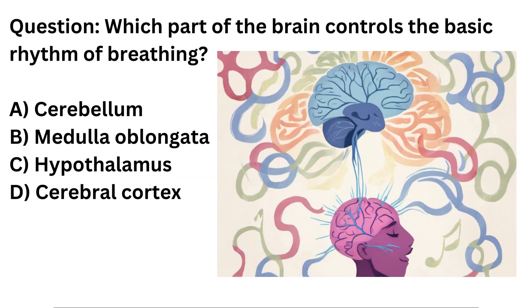Question. Which part of the brain controls the basic rhythm of breathing? A. Cerebellum. B. Medulla oblongata. C. Hypothalamus. D. Cerebral cortex.